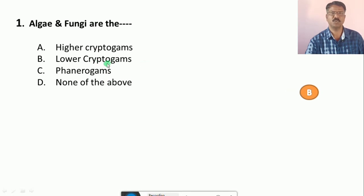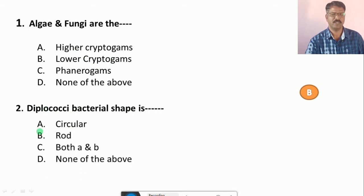Question number 2: Diplococcus bacterial shape is... Their options are A. Circular, B. Rod shaped, C. Both A and B, D. None of the above. Their correct option is A, that is Circular shaped Diplococcus bacteria.